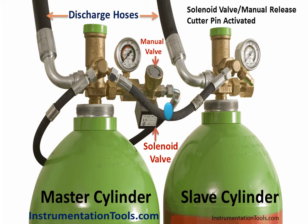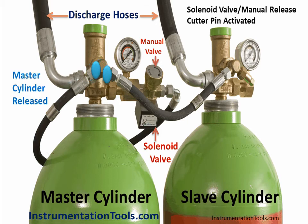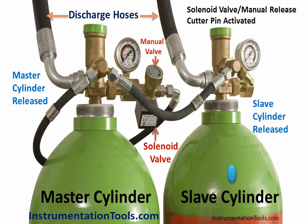Now the released gas has two paths to go. One is the main discharge line which is connected to the control room for fire extinguishing. The second path goes to the next slave cylinder — this master cylinder pressure activates the slave cylinder top valve and thus the slave cylinder gas is released.